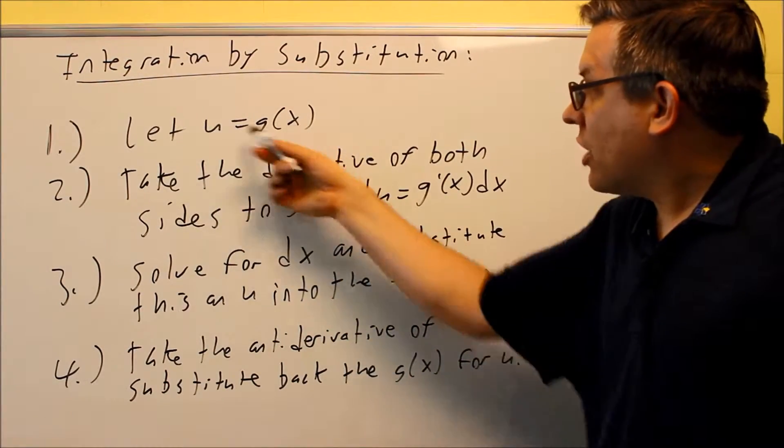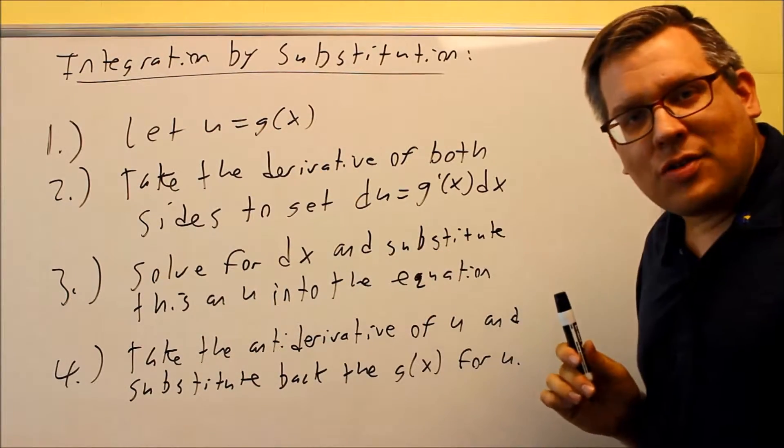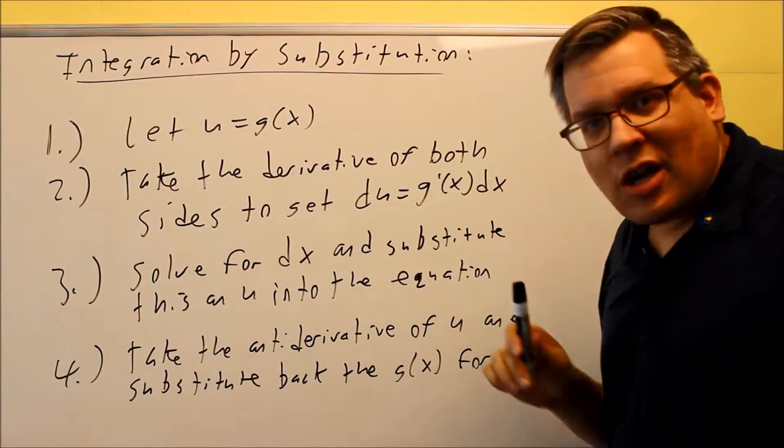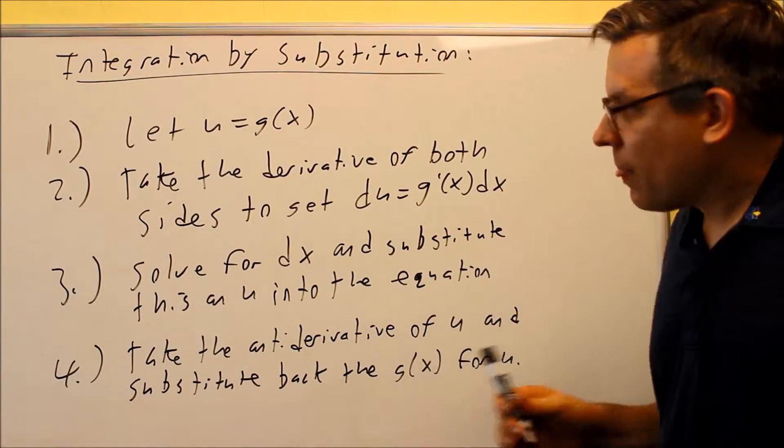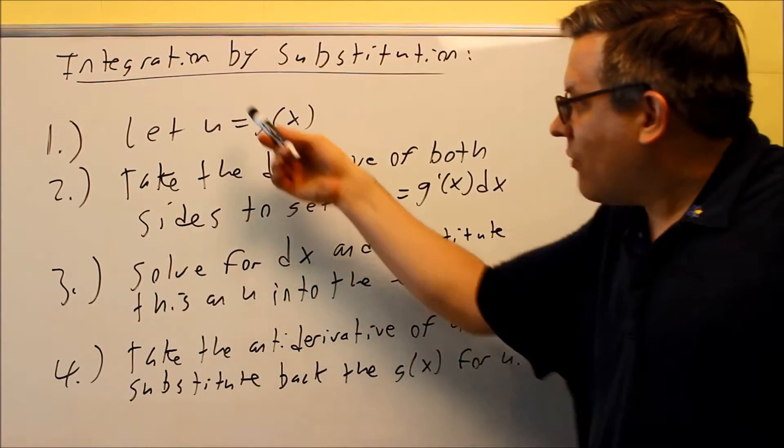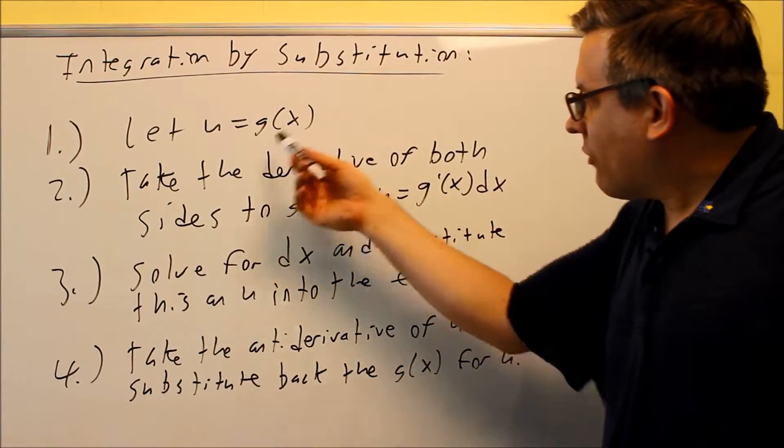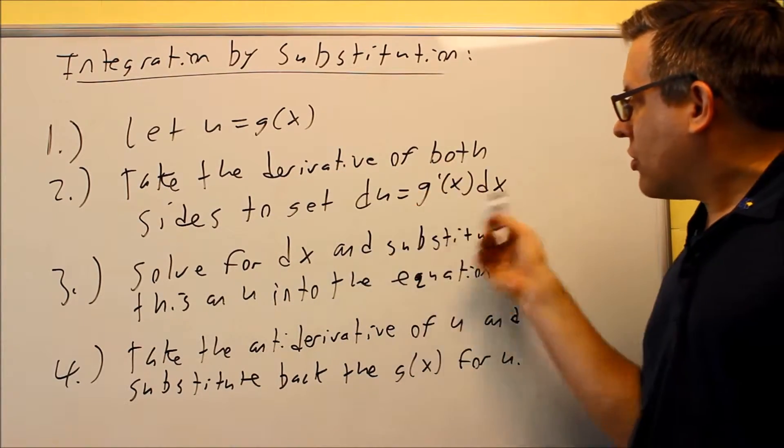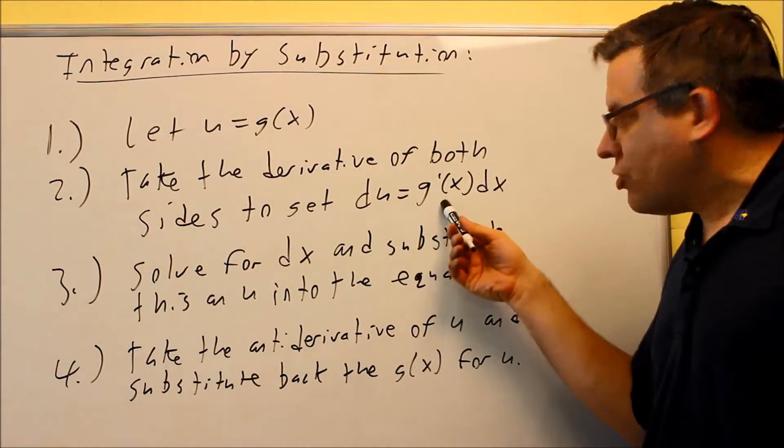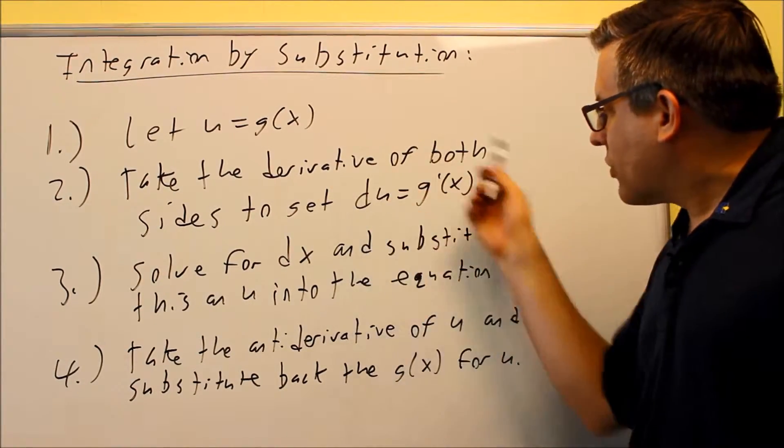Next thing you're going to do is you're going to take the derivative of both sides. Derivative of u is du. We take the derivative of this and then we also have a dx in the end. Technically what you're doing is when you find the derivative of u with respect to x, technically you have du over dx and then you would multiply both sides by dx. Well, every single time it will happen where you can actually just use this formula here, du on this side, g'(x), and then dx.